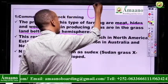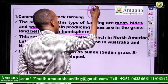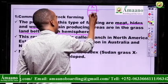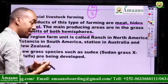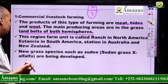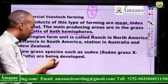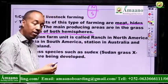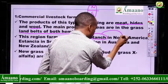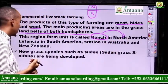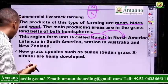When we say both hemispheres, we are talking about the northern hemisphere and the southern hemisphere. The grassland is found in both of those areas. This type of farm unit is called a ranch in North America. In North America, they call the grassland area a ranch or range.